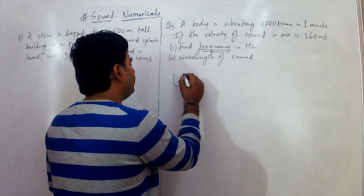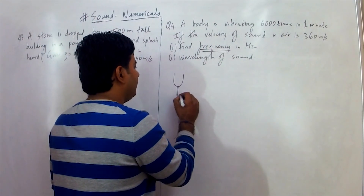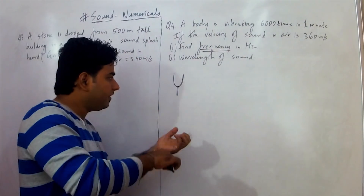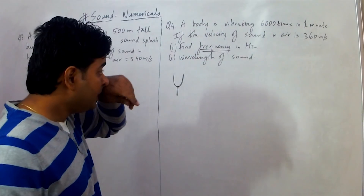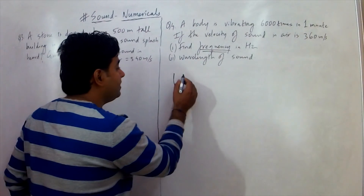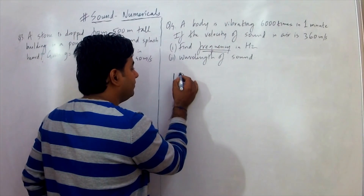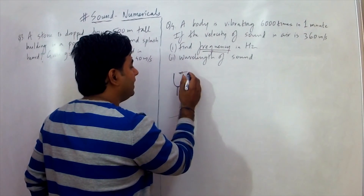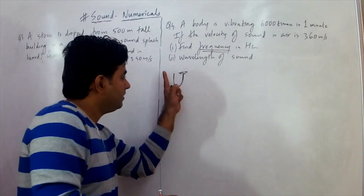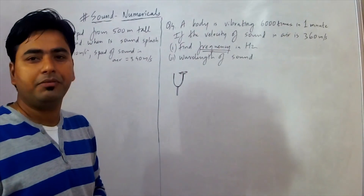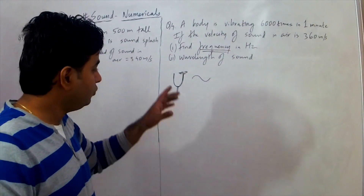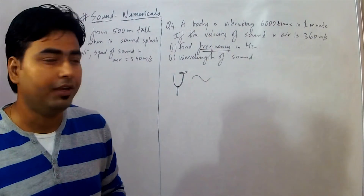Here we have a vibrating body — suppose a tuning fork. When we strike it, it vibrates. It goes to one side, then the other side, and back to the main position — that is one vibration. One vibration corresponds to one sound wave produced. Always remember that.